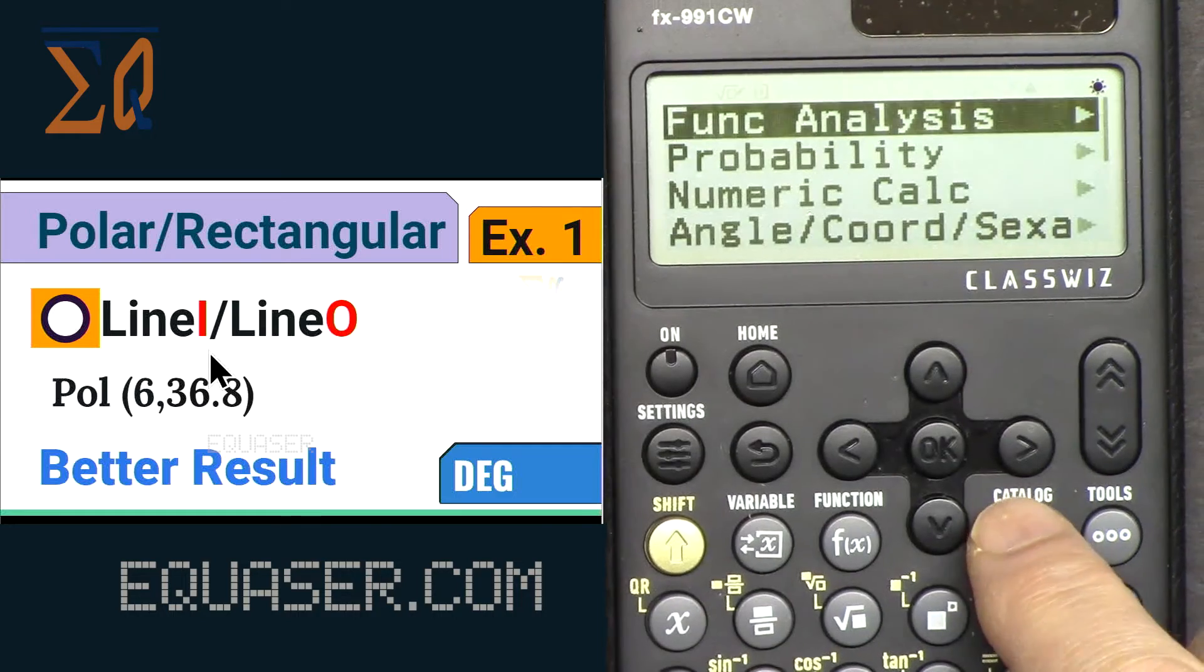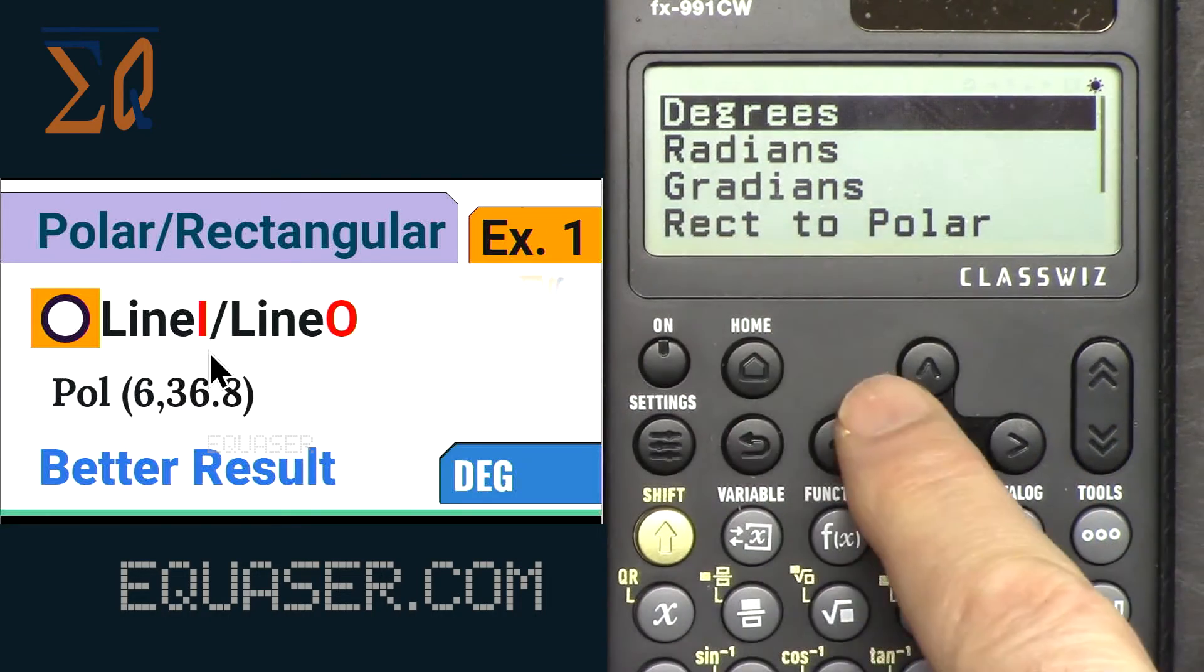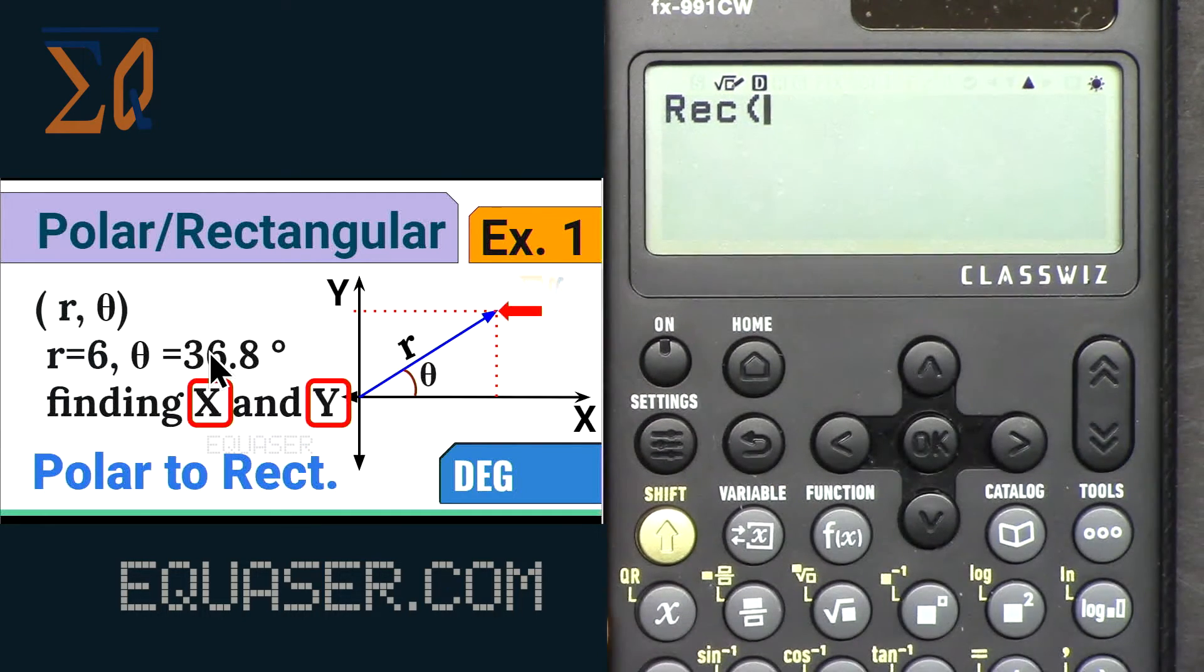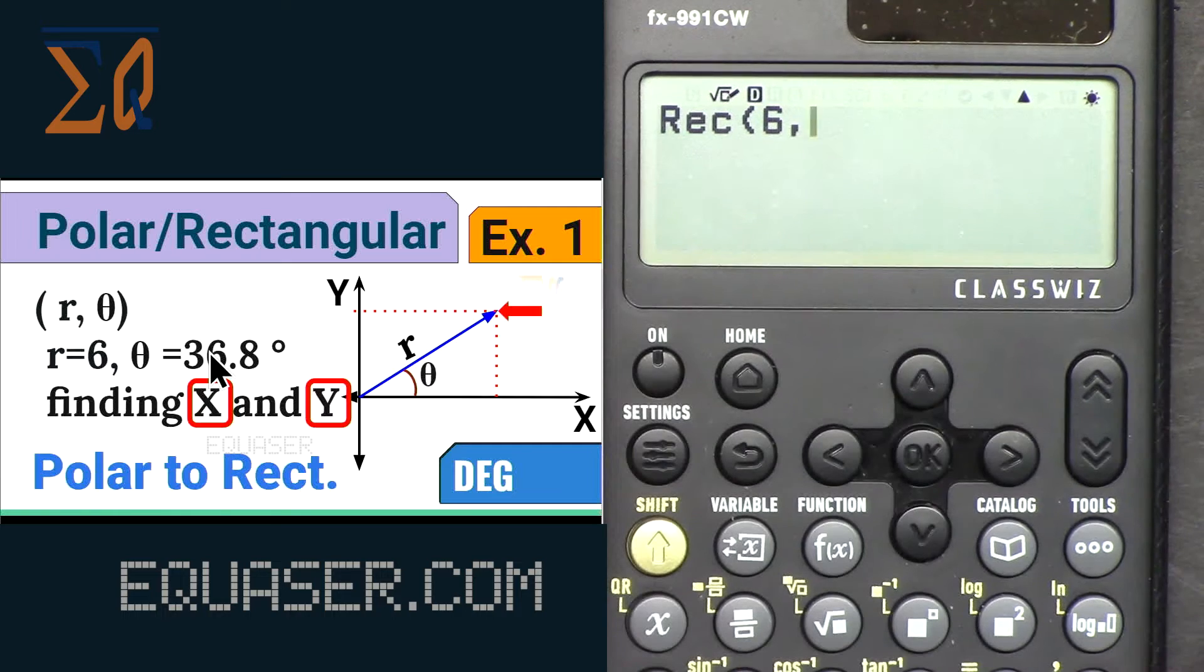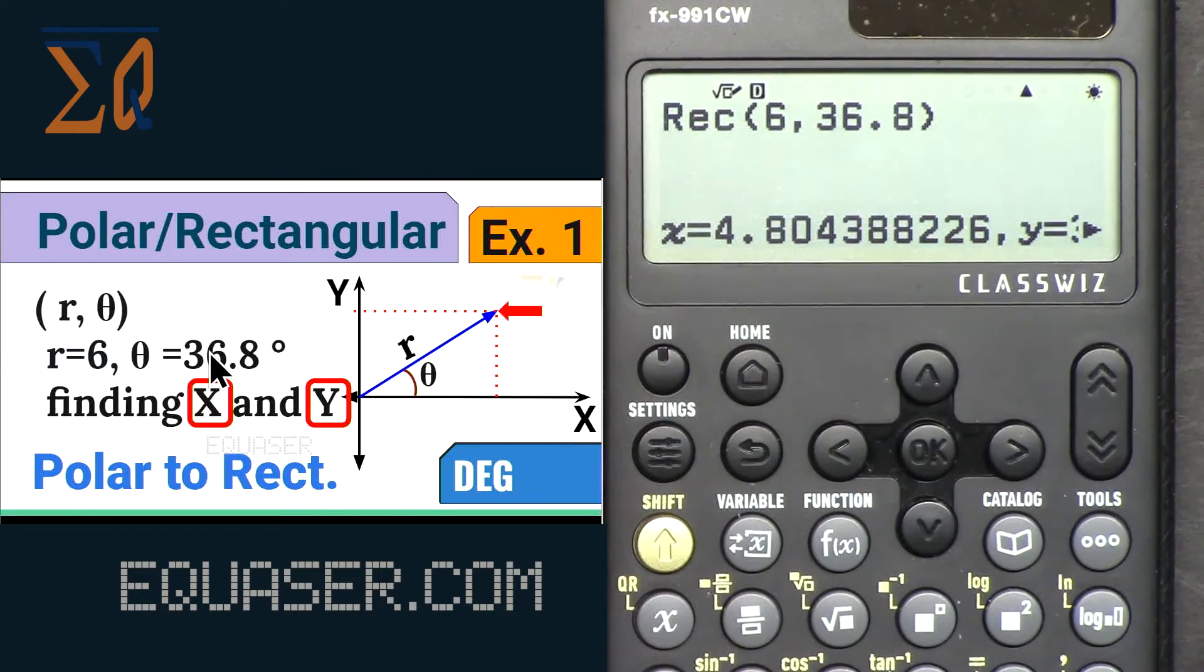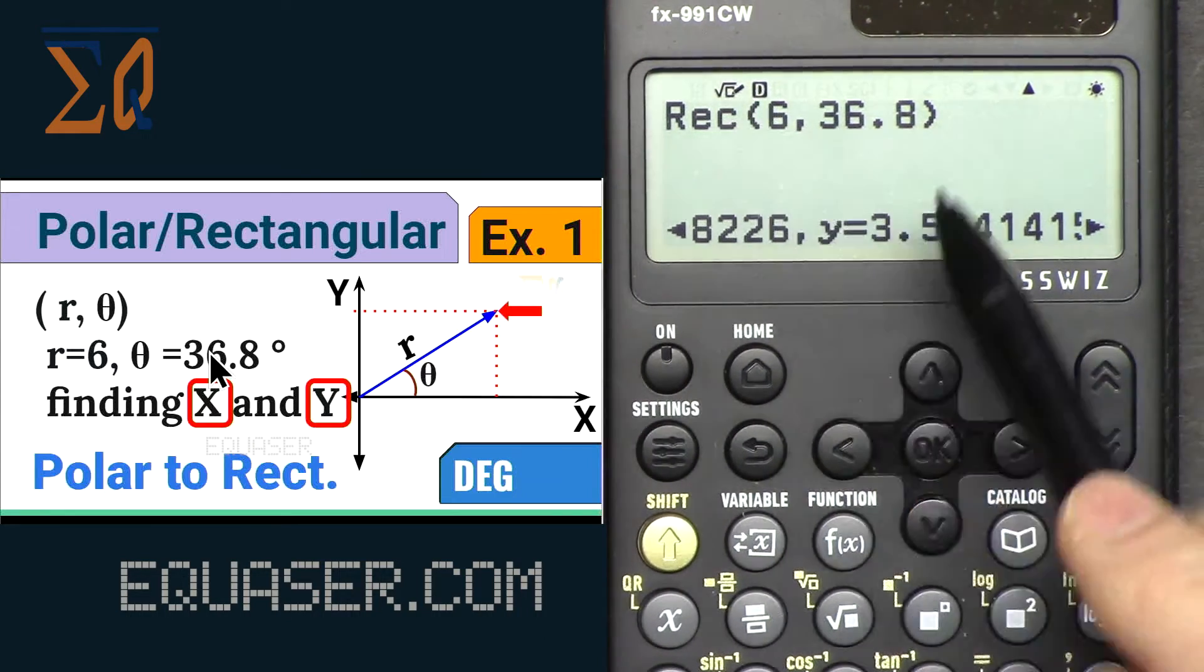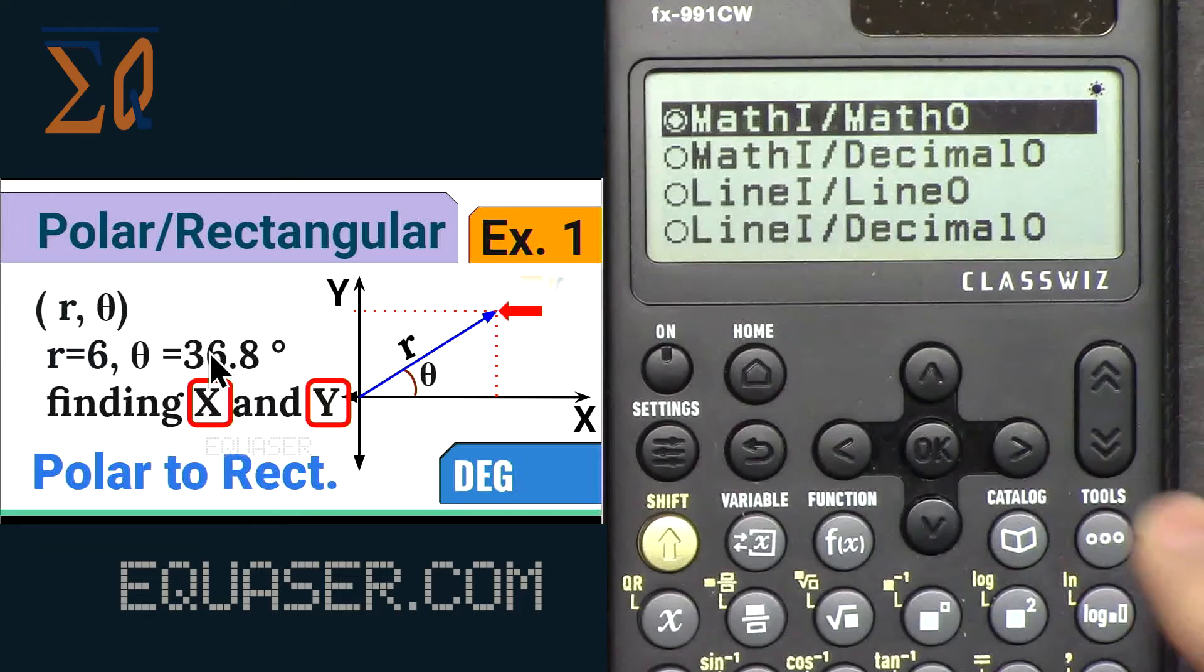We have to go in Line mode, we'll see a better result. But let's convert it. We go to Catalog, come to Coordinate, and here because our value, we want it polar to rectangular. So we have polar. Let's enter 6 and then Alpha, with this button that is our comma, 36.8, and then close it and press Equal. As you can see we're getting X and Y and the arrow is here. We can go and see it, but because we're in Math mode we cannot see the value properly.